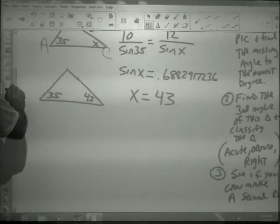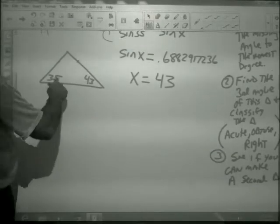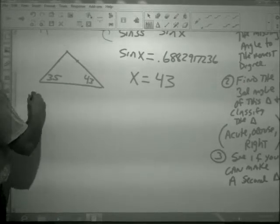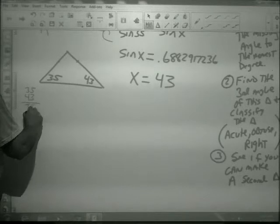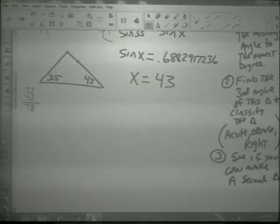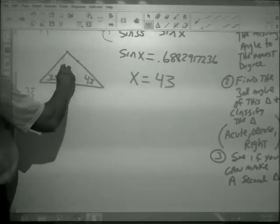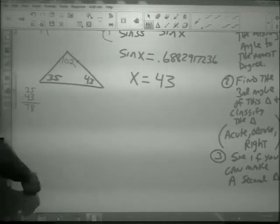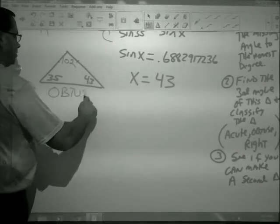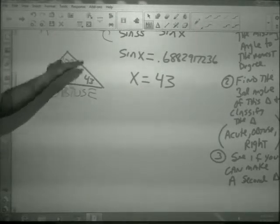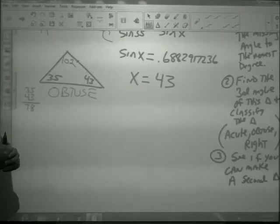So, I'm right here right now. 35 and 43. 35, 43 is 78. So, this has to be 102. So, this triangle, I would say is obtuse. I have classified this as obtuse.